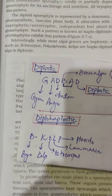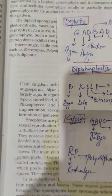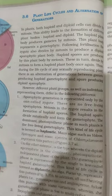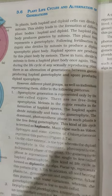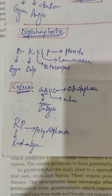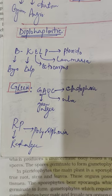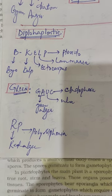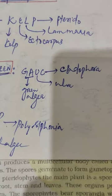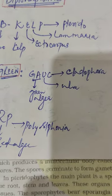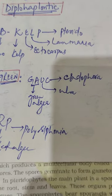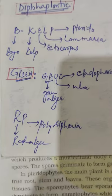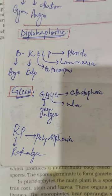The haplodiplontic life cycle is shown by bryophytes, kelp, Ectocarpus, Laminaria, pteridophytes, green algae, Ulva, Cladophora, Polysiphonia and red algae. These can be remembered by the trick 'B-KELP': B for bryophytes, K for kelp, E for Ectocarpus, L for Laminaria, P for pteridophytes. Green algae can be remembered by 'GAUC': GA for green algae, U for Ulva, C for Cladophora. RP stands for red algae and Polysiphonia.